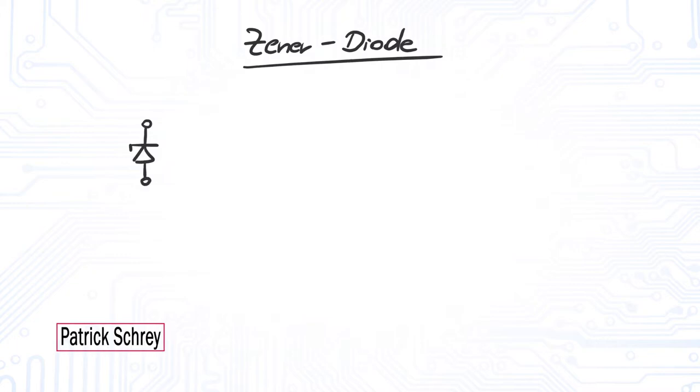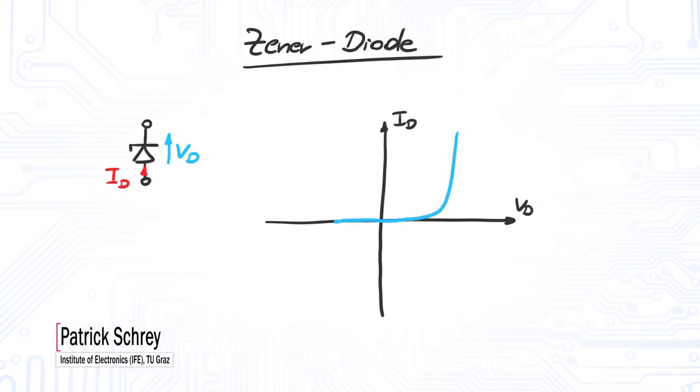Zener diodes are special types of diodes. They not only show the normal behavior of a diode, they also have a very steep incline in reverse direction. This Zener or avalanche breakdown makes Zener diodes a decent reference voltage device.